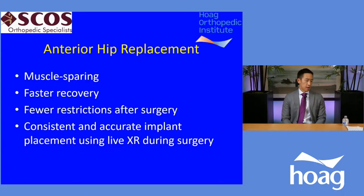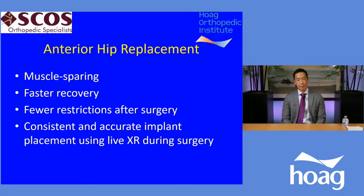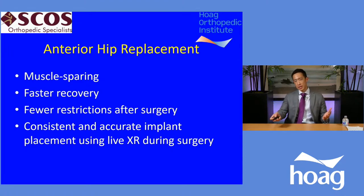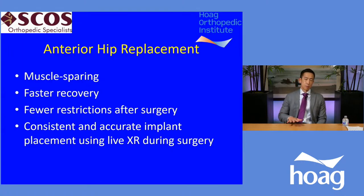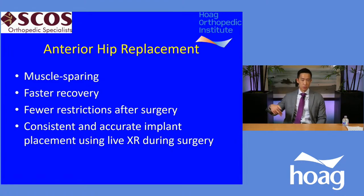Regarding minimally invasive options for hip replacement: for hip arthritis, arthroscopic options — putting a camera inside — generally don't work, because you can't scrape out arthritis any more than you can scrape rubber off a worn tire to get more tread back. The latest advancement over the last five to ten years is the anterior hip replacement — done through the front of the hip rather than the back. The anterior approach is muscle-sparing: going through the back requires cutting the muscles, whereas going through the front accesses the hip joint without cutting any muscle at all.